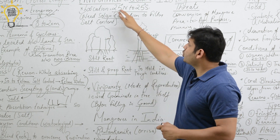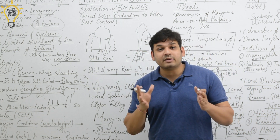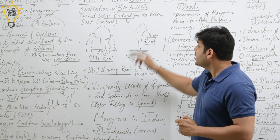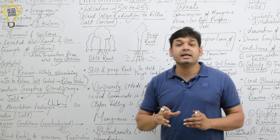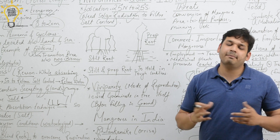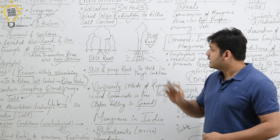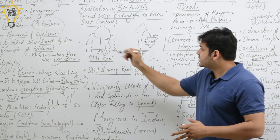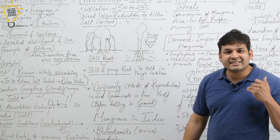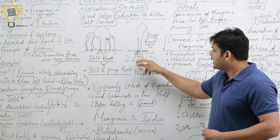Mangroves are found in tropical and subtropical zones, that is around 25 degrees north to 25 degrees south. Solar radiation is higher in these areas, and mangroves need solar radiation to filter salt content. I have written two types of root systems: stilt roots and prop roots. Like a banyan tree whose roots go into the ground from the sides — those are stilt roots. And prop roots are another type seen where trees stand in water.